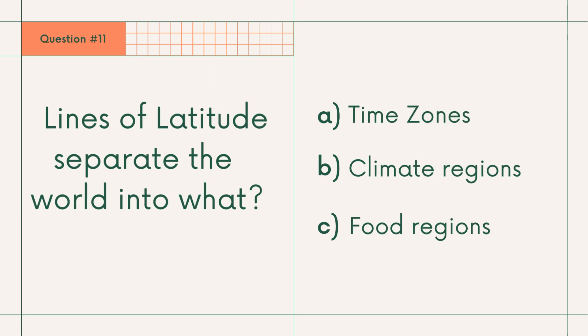Question 11: Lines of latitude separate the world into what? A. Time zone, B. Climate region, or C. Food region. Answer: B. Climate region.